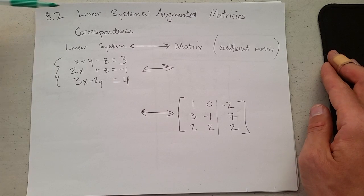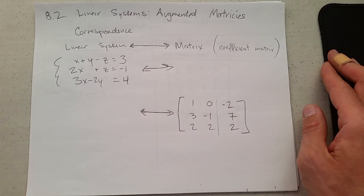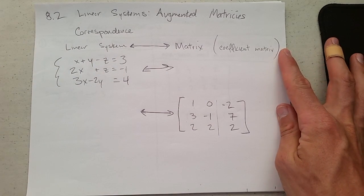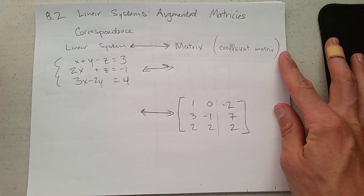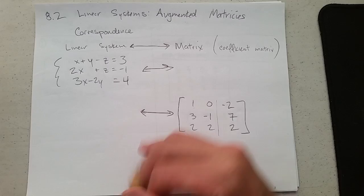How do we get to a matrix from a linear system? Well, there is a correspondence between a linear system and a matrix. This matrix could be called the coefficient matrix, it could also be called the augmented matrix, and I have two different examples here.